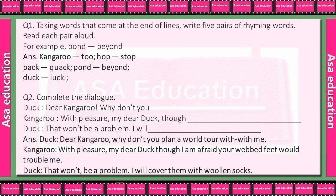Question 1 hai: taking words that come at the end of lines, write 5 pairs of rhyming words. Line ke end mein jo words aaye hain, unke aapko rhyming words banaane hain, aise 5 pairs karne hain.